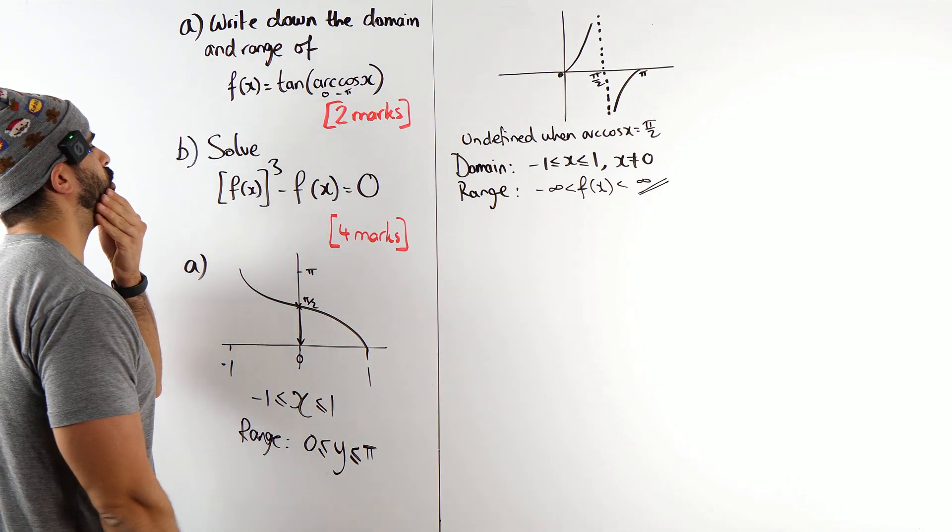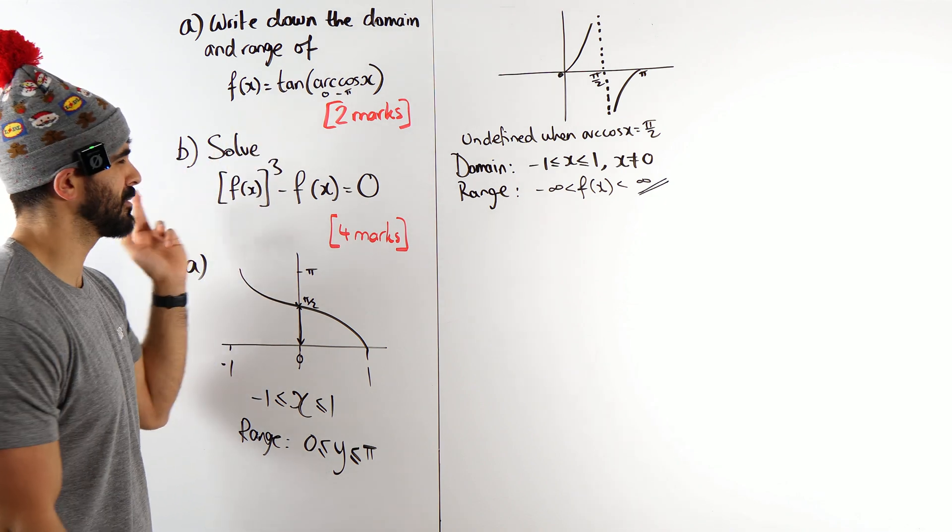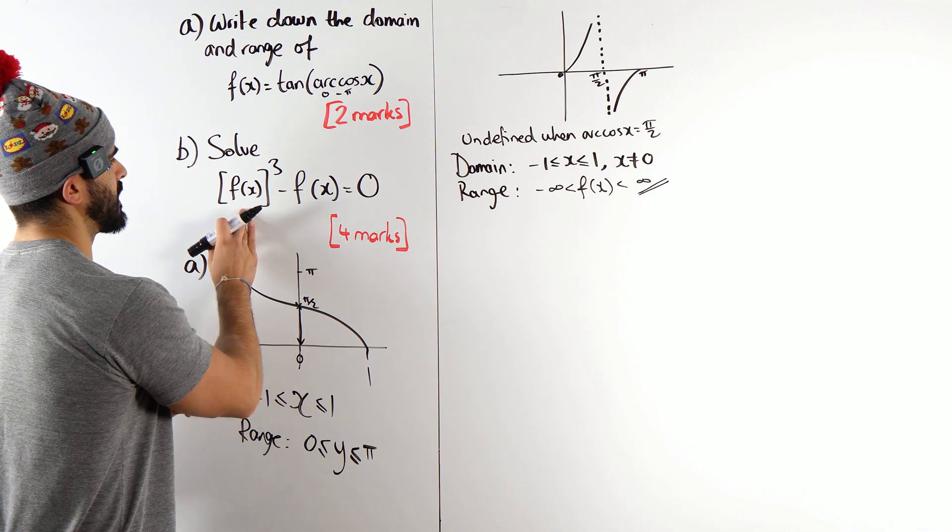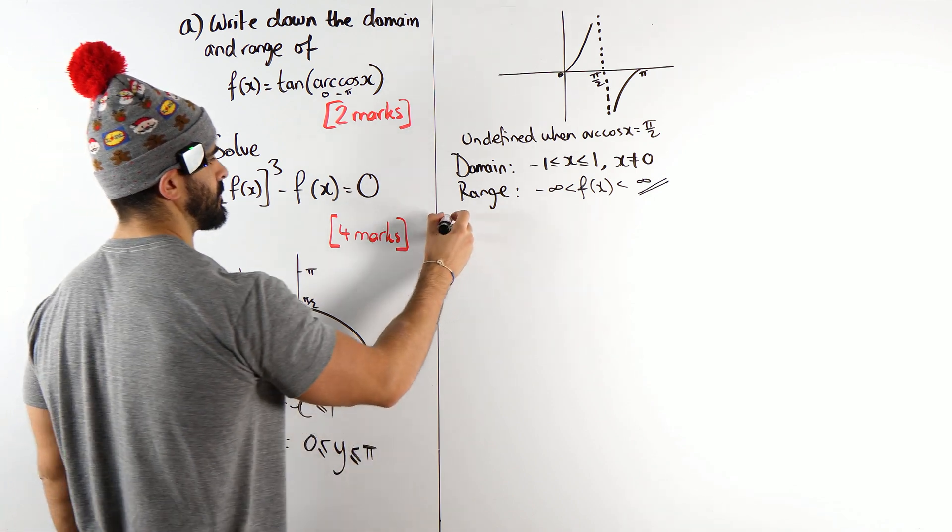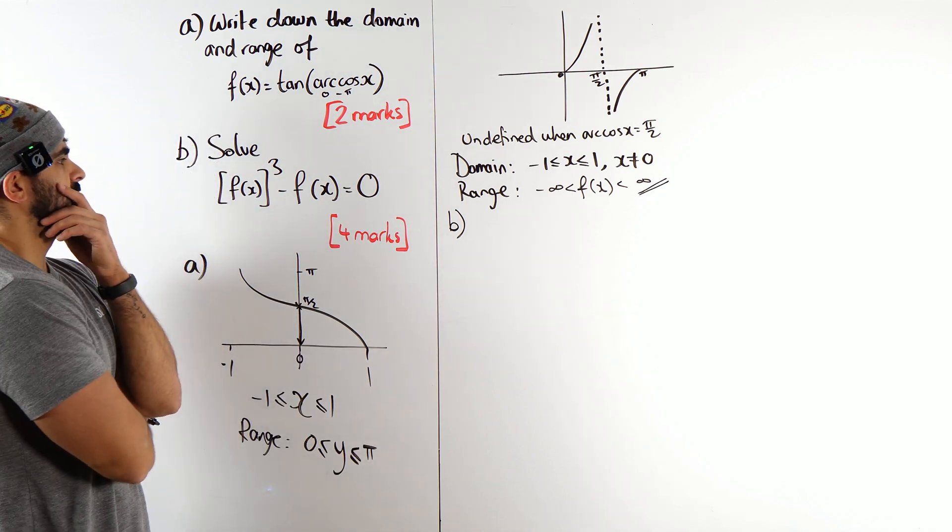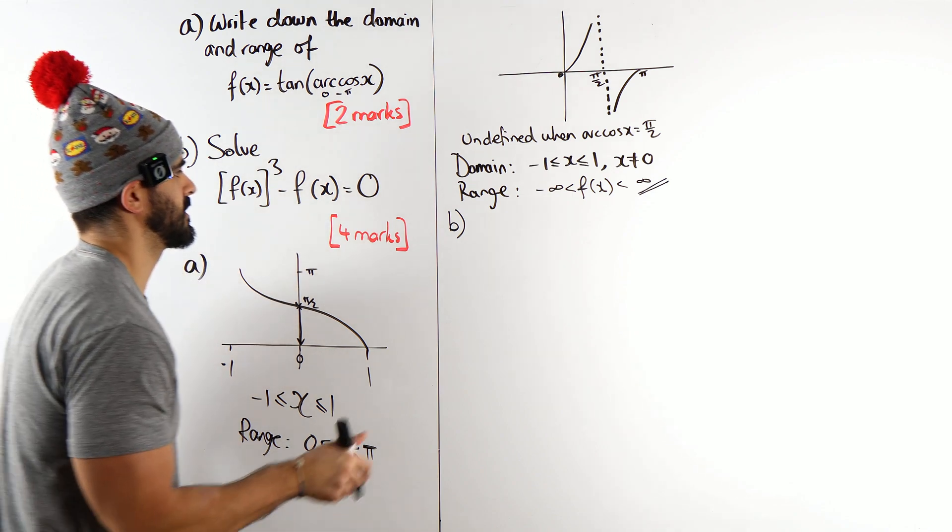Alright. Now, part b. Solve this. Now, are you going to substitute that into here? Probably not. There must be some trick to this. We have the cube of f(x) minus f(x) is zero. Now when I solve that, I notice a common factor. So I think I'm going to factorize out f(x) first and see what happens there.